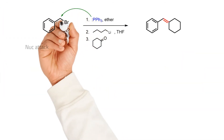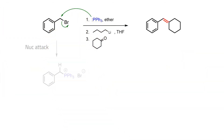Step 1 involves the alkyl halide being treated with a phosphine nucleophile, which replaces the halide leaving group in a substitution reaction. The phosphonium salt is often isolated by filtration.